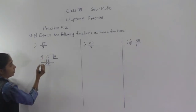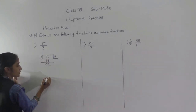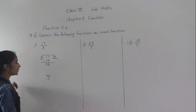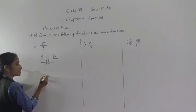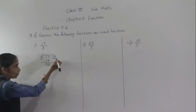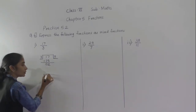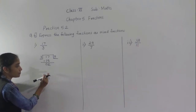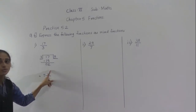Now how to write 17 upon 3 as a mixed fraction. The denominator 3 we write as it is. The quotient we got is 5, that we write as the whole number part. The remainder is 2, which we write as the numerator. So we verify: 3 fives are 15, 15 plus 2 is 17. So 17 upon 3 in mixed fraction is 5 and 2 upon 3.